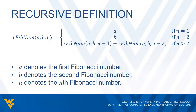If N is one, that means we want the first Fibonacci number, which is A. If N is two, that means we want the second Fibonacci number, which is B. If N is greater than two, we need to do some computations to get that particular Fibonacci number. We're going to need two recursive calls: one to find the N minus one Fibonacci number, and another to get the N minus two Fibonacci number, and we take the sum of those two.